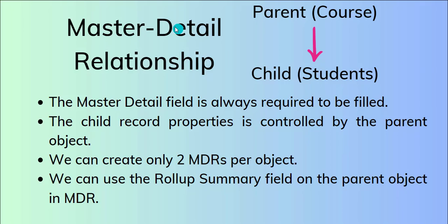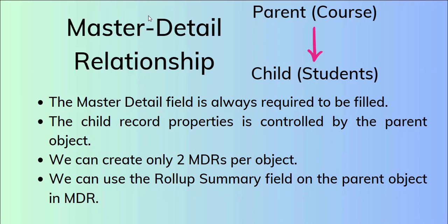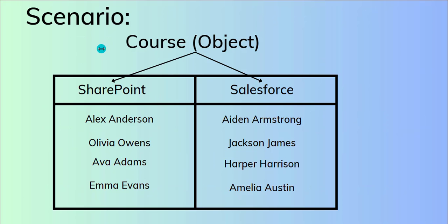In the Master-Detail Relationship, the master field is always required. The child record's properties are also controlled by the parent object. We can create only two MDRs per object, and we can use the Roll-Up Summary field on the parent object in the Master-Detail Relationship.